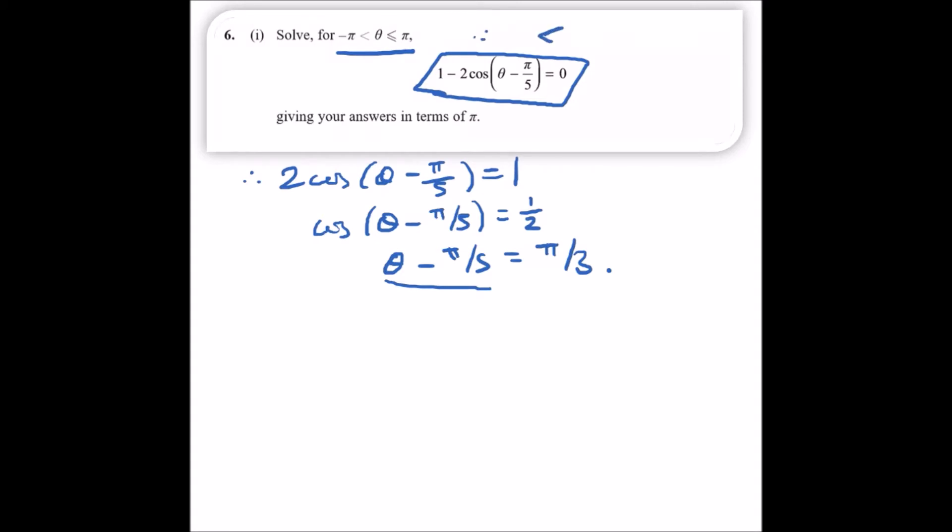Therefore, within the interval of θ - π/5, we should subtract these two amounts. We're going to have π - π/5 = 4π/5, and π - π/5 = -6π/5. This is the interval we're now working with.